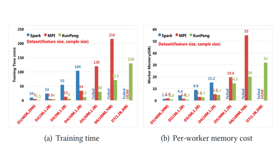However, Kun Peng can still handle them efficiently, which shows its scalability and robustness. The largest scale we have tried, which Kun Peng can still process normally, is 30 billion features, 200 billion samples, and 1 trillion parameters.